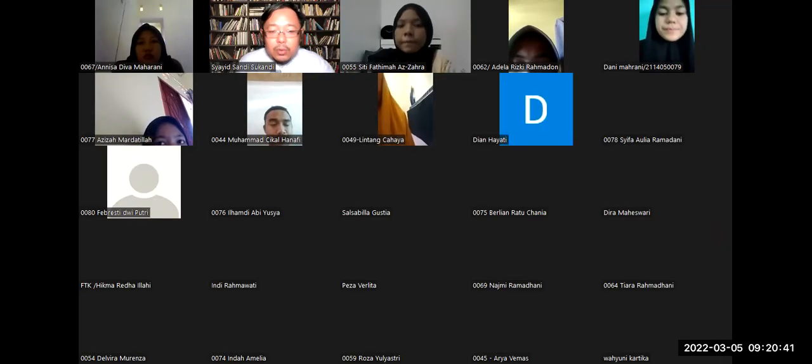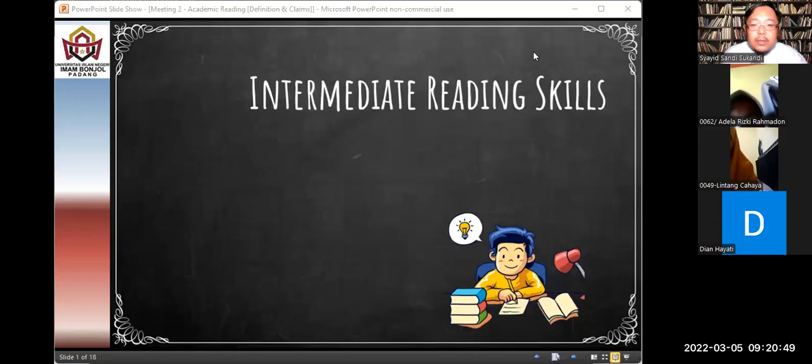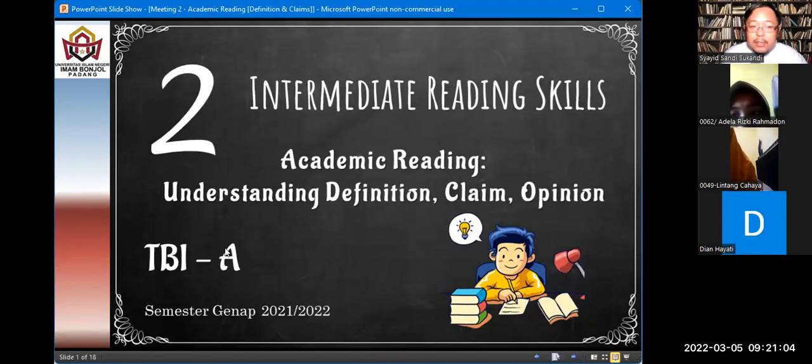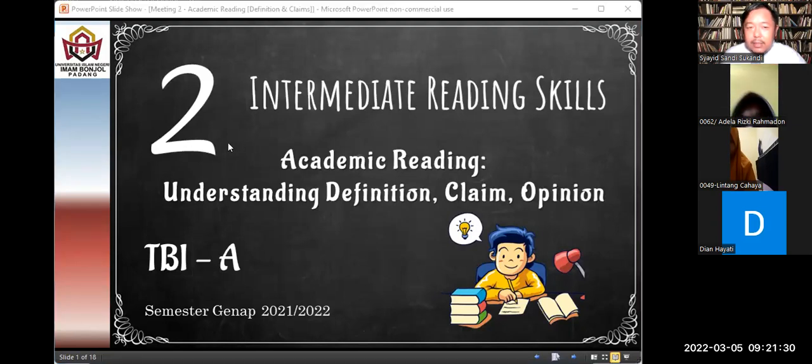Untuk hari ini yaitu tentang intermediate reading skills. Can you see that now? Yes sir. So today this is our topic. The topic is about academic reading, understanding definition, claim and opinion. Jadi kita akan membahas terlebih dahulu yang dimaksud dengan academic reading, lalu kaitannya dengan memahami definisi, claim, dan opini yang ada di dalam academic reading. Membaca secara academic.